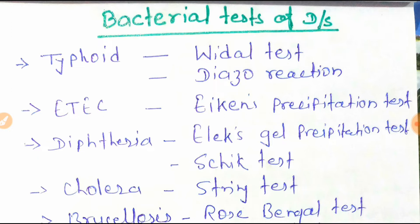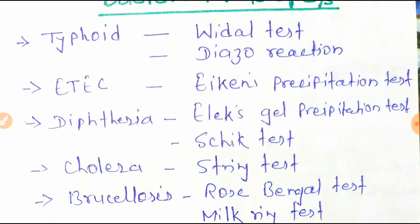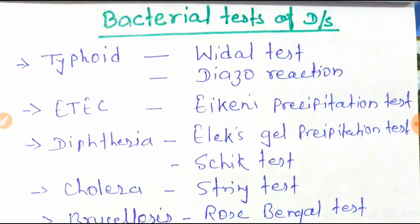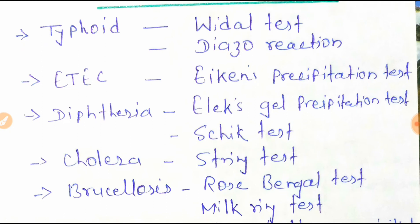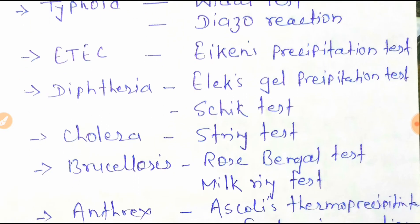Let us start with typhoid fever. Typhoid is diagnosed mainly by the Widal test, and the second one is the Dreyer's agglutination reaction. Next, ETEC uses the Elek precipitation test. Next one is diphtheria — the main test is the Elek gel precipitation test and Schick test.